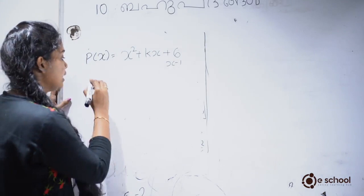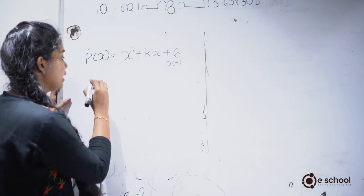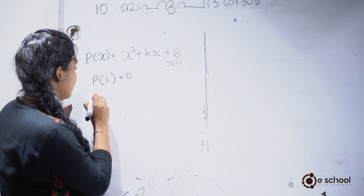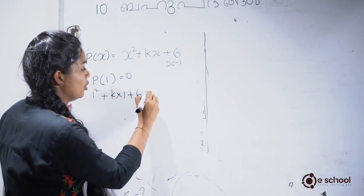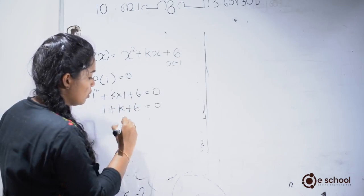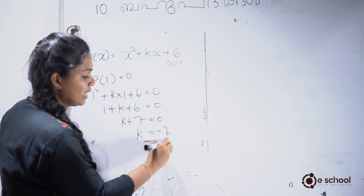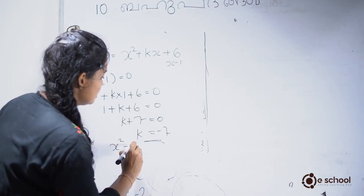We use P of x to solve this problem. Let's learn how P of x equals 0 and how P of 1 equals 0. Now P of 1 is: 1 squared plus k into 1 plus 6 equals 0. So 1 plus k plus 6 equals 0, which gives k plus 7 equals 0, therefore k equals minus 7. The polynomial becomes x squared minus 7x plus 6.